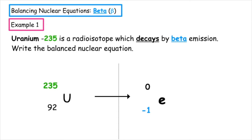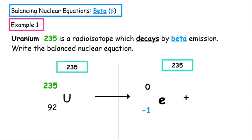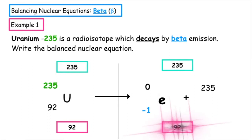We need to have a balanced nuclear equation, so the top numbers on both sides of the equation need to match, and the bottom numbers also need to balance. On the left-hand side, the total mass number is 235, so on the right-hand side, the total mass number also has to equal 235. Zero plus what equals 235 — that's 235. The bottom number on the left-hand side totals 92, so on the right-hand side it also has to equal 92. Minus one plus what equals 92, so the particle produced has an atomic number of 93. Looking up element 93 in the periodic table, we find neptunium, chemical symbol Np.